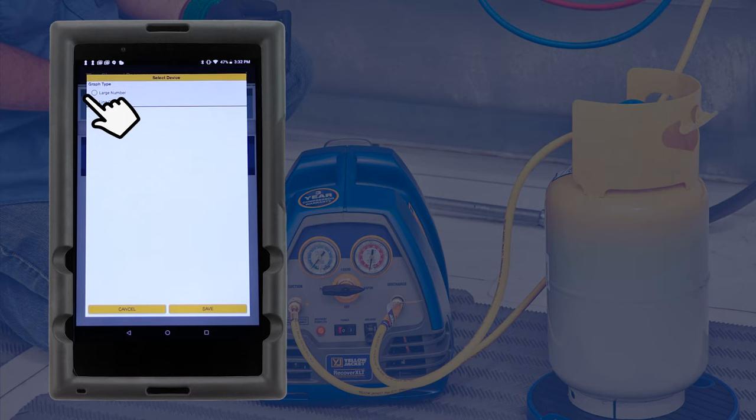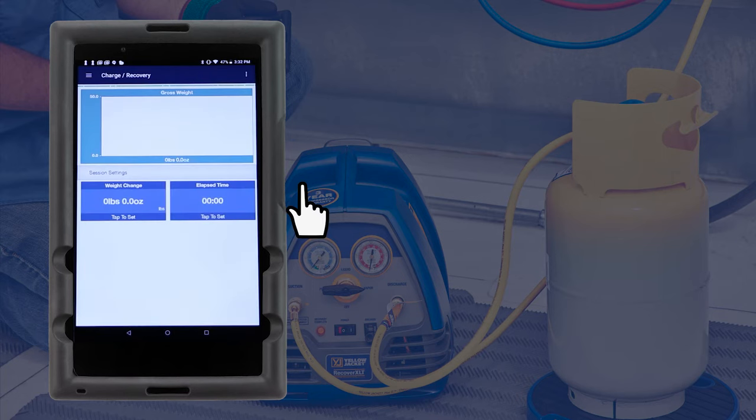Below the gross weight is a weight change reading and a timer. Tap on either of them to set or reset them.